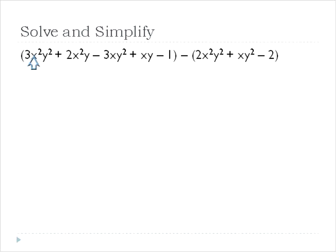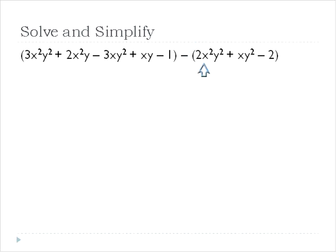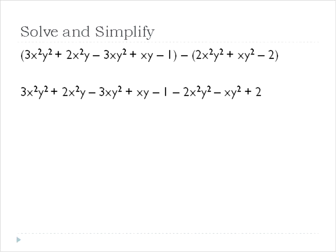Here's our final problem. When you have a variable like x squared y squared, that is the entire variable. So x squared y squared is one variable, x squared y is a different variable, and xy squared is again a different variable. Each of these is a separate and distinct variable — it's like apples, oranges, bananas, and pears. What we're going to do now is subtract everything inside here: so we'll subtract 2x squared y squared, we'll subtract xy squared, and we'll subtract negative 2 — in other words we will add 2.